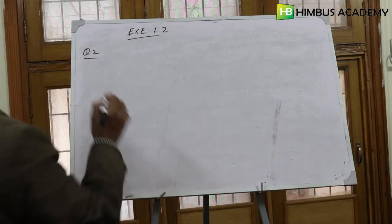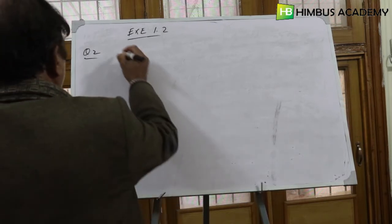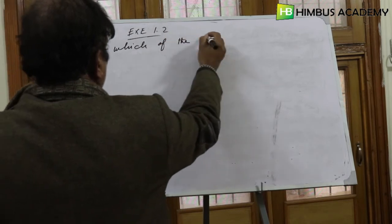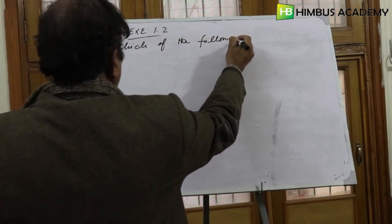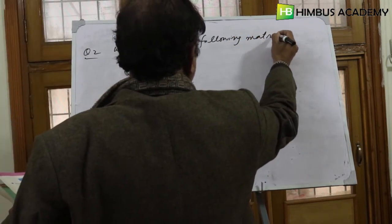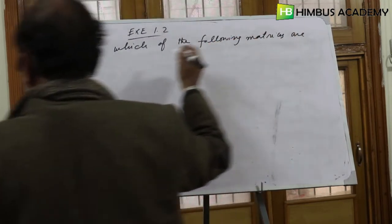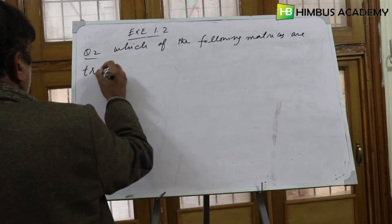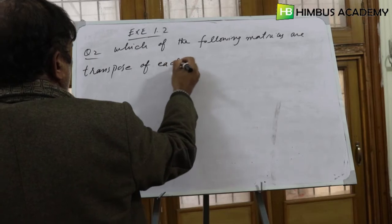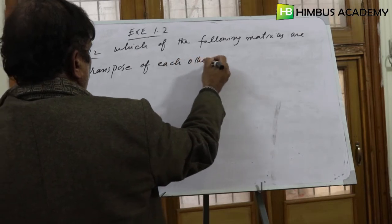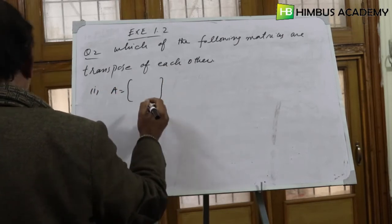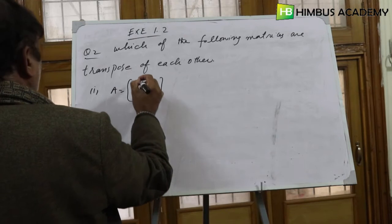Question number two, exercise 1.2: which of the following matrices are transpose of each other? Number one: A is equal to [a1, a2; b1, b2].